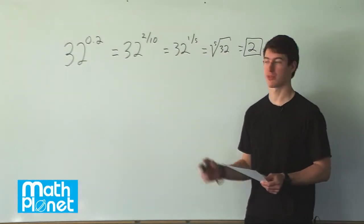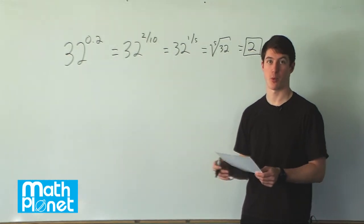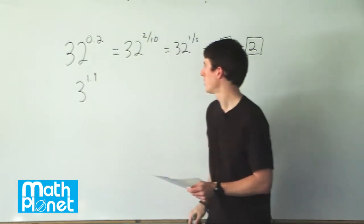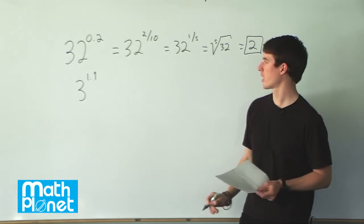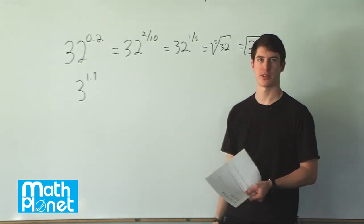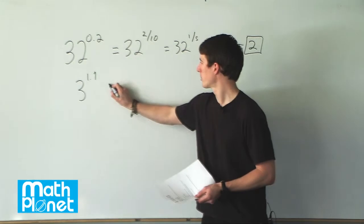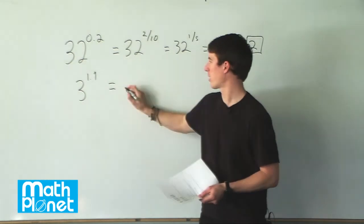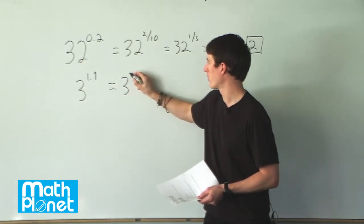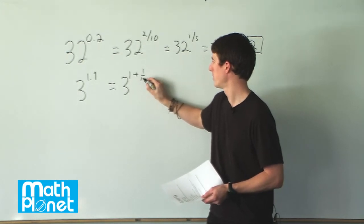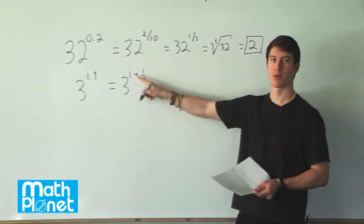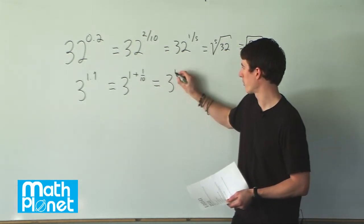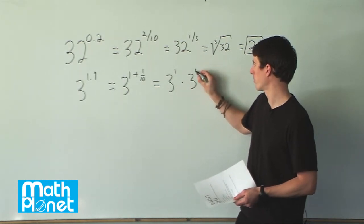Let's take a look at another example with powers or indices that we can simplify. Let's look at 3 to the power of 1.1. We can't find the answer for this right away, but we can rewrite it using a rule of powers as the same base of a sum. So this is the same as 3 to the power of 1 plus 1 tenth, which means we can write it as a multiplication: 3 to the power of 1 times 3 to the power of 1 tenth.